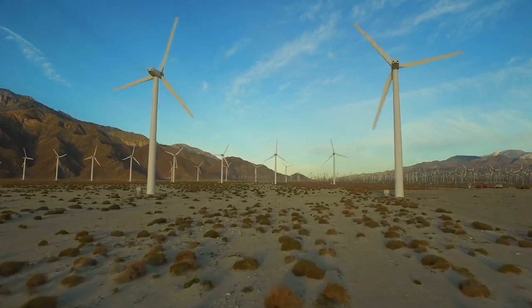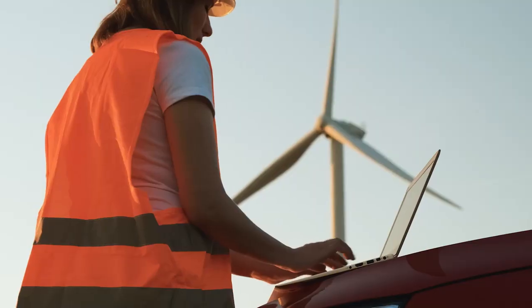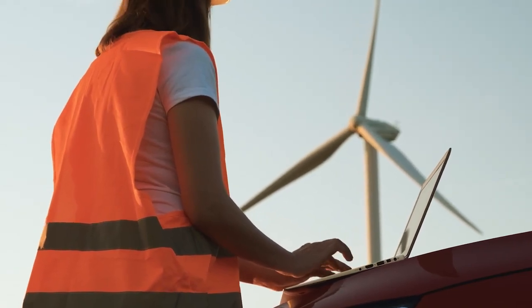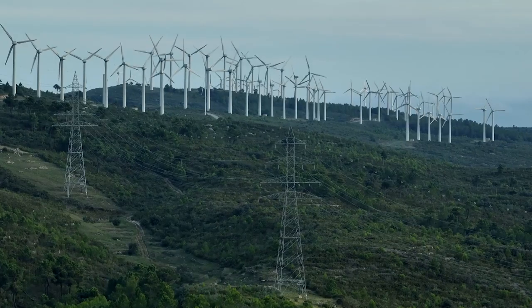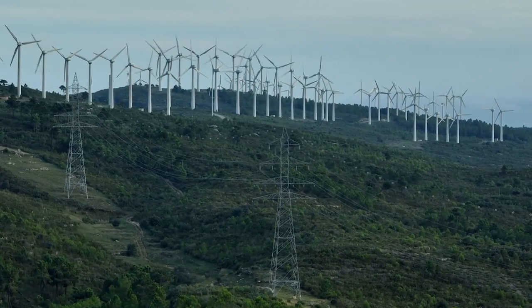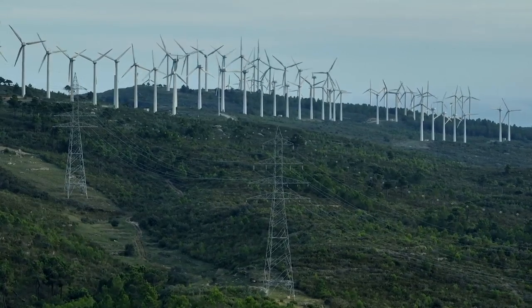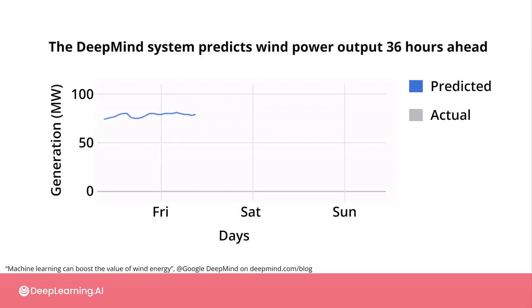Consider wind power, a renewable energy source with a much lower carbon footprint than fossil fuels. One problem is that it's difficult to predict when and how strongly the wind will blow, and how each turbine in a wind farm will respond to changing conditions. This makes it hard to plan for available wind power at any given time, and consequently harder to replace fossil fuels. To address this, AI can be applied using weather forecasts and historical wind turbine data to more accurately predict available energy one or two days in advance. A team at Google's DeepMind showed they were able to increase the value of wind energy by about 20 percent using these methods.